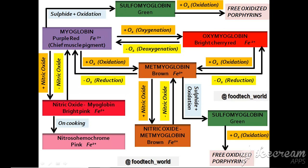When we cut fresh meat it is purple in color, but its surface quickly becomes bright red upon exposure to air — this is due to the conversion of myoglobin to oxymyoglobin. When oxymyoglobin is exposed to air for a very long time it becomes metmyoglobin, which is brown in color. When metmyoglobin reacts with nitric oxide it becomes nitric oxide metmyoglobin, also brown. When myoglobin reacts with nitric oxide it becomes nitric oxide myoglobin, which is bright pink, and on cooking becomes nitric oxide myochromogen, which is pink in color.